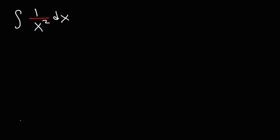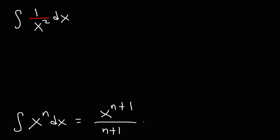The formula that we need to use is this: the integral of x raised to the n — that is a variable raised to a constant — is going to be x raised to the n plus 1, divided by n plus 1, plus c, the constant of integration. So basically we need to use the power rule, but right now we have a rational function that is not in the right form. We need to put it in the x raised to the n format.